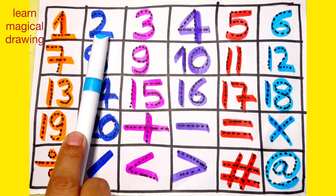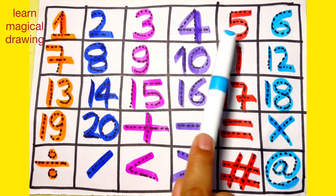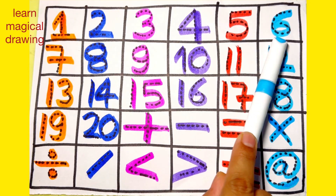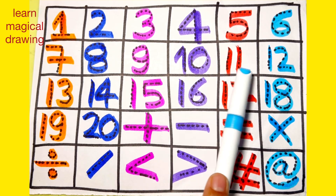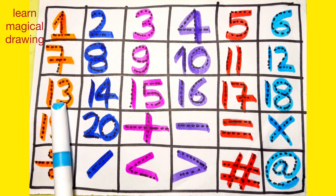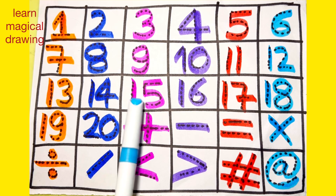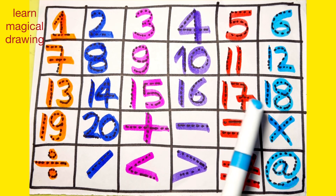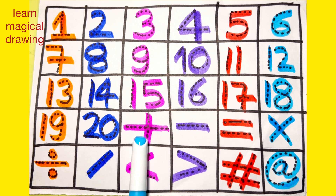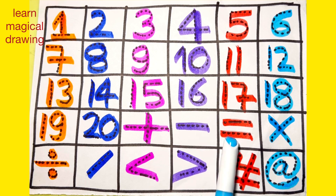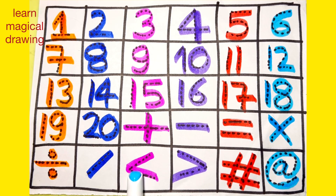1, 2, 3, 4, 5, 6, 7, 8, 9, 10, 11, 12, 13, 14, 15, 16, 17, 18, 19, 20. Plus, minus, equal, multiply, divide, diagonal, less than, greater than, has, add the rate. Like and subscribe.